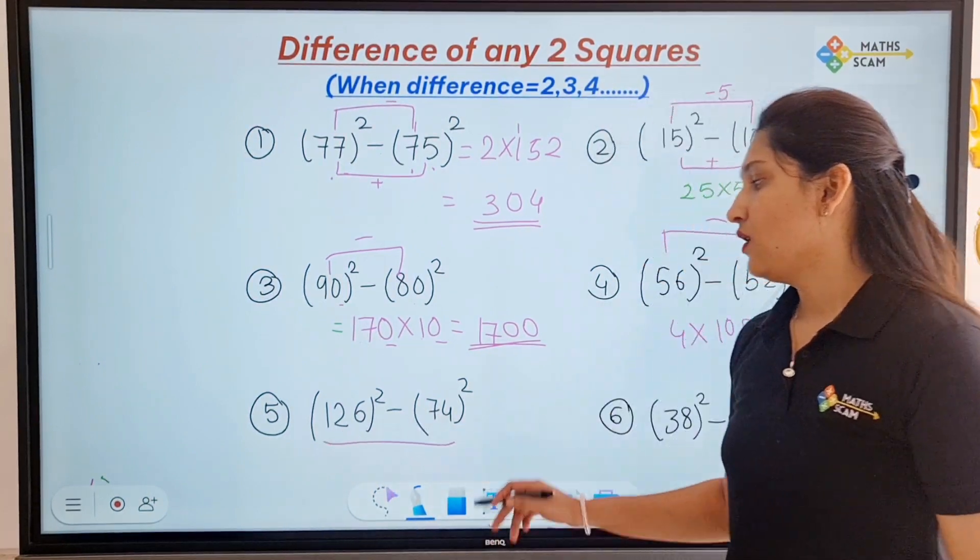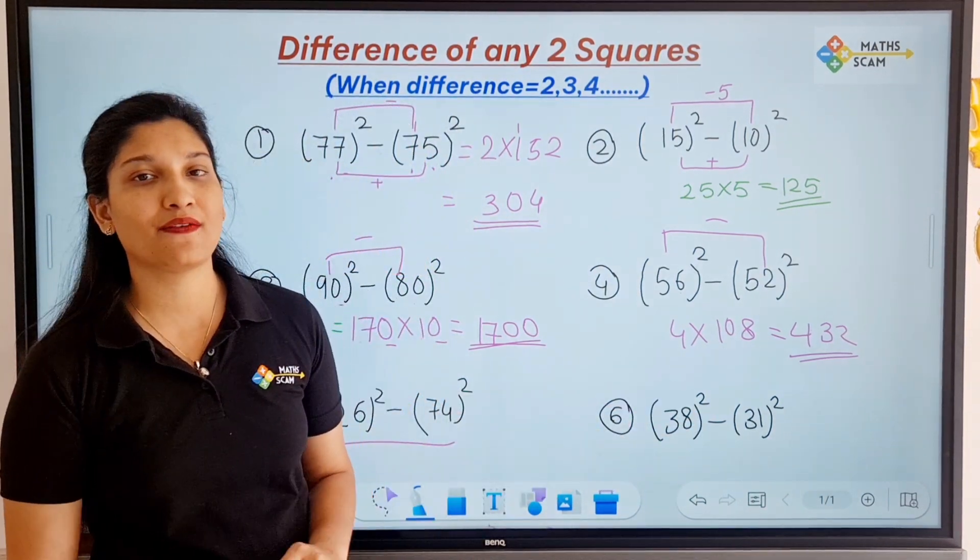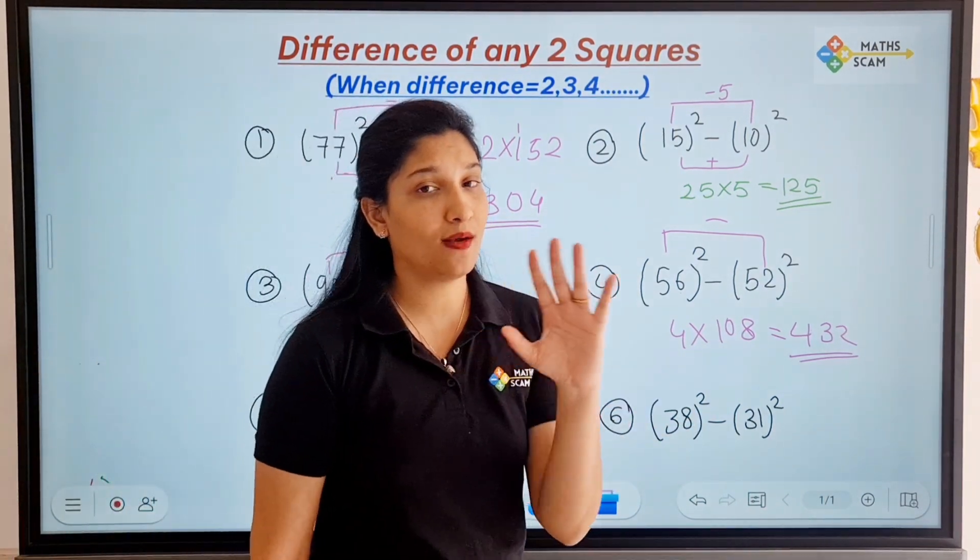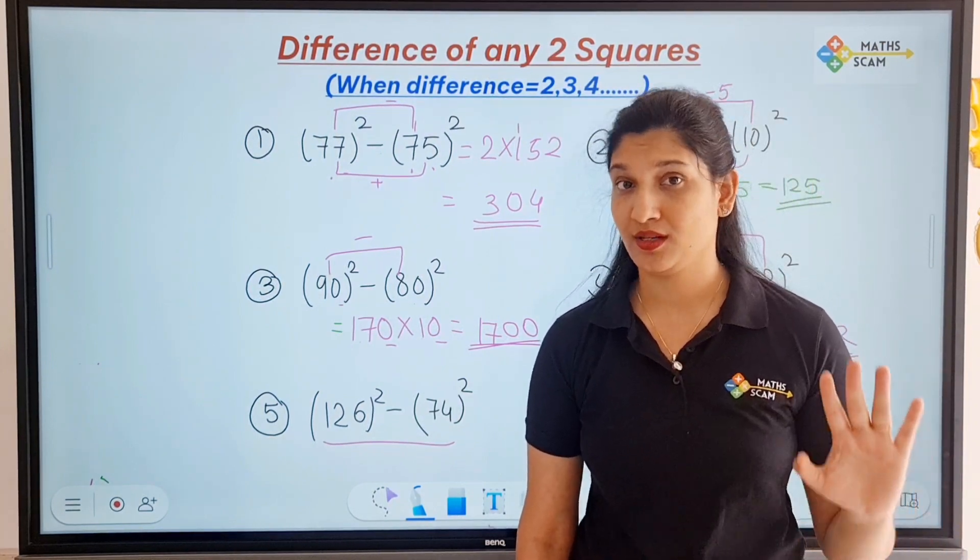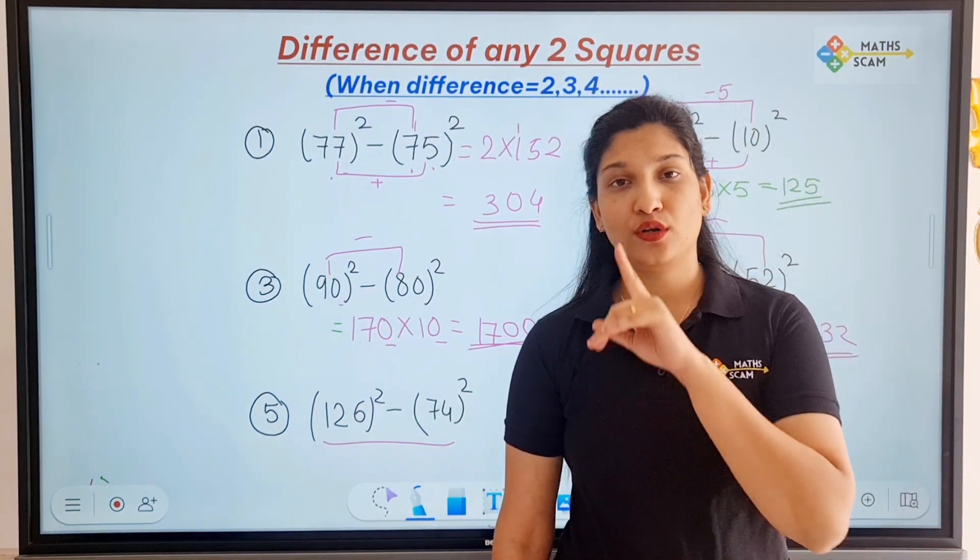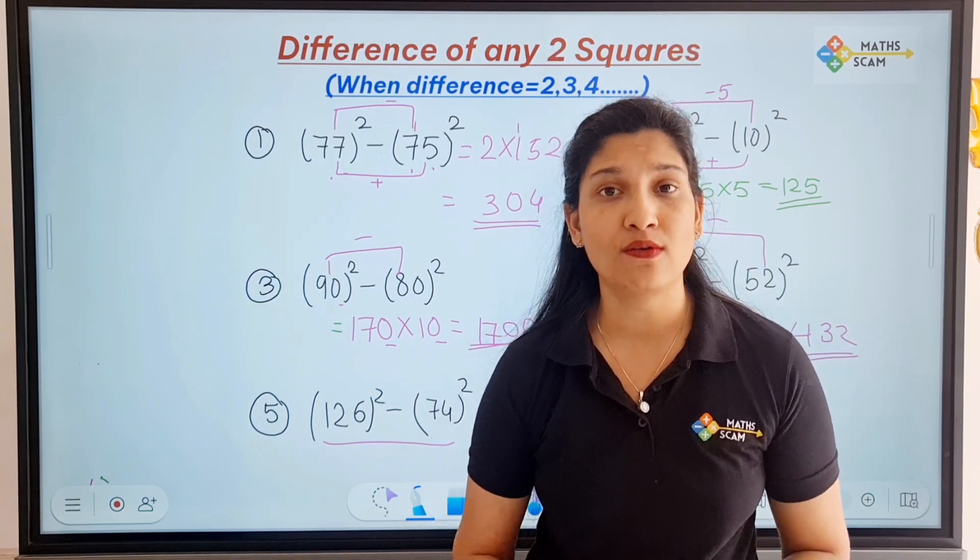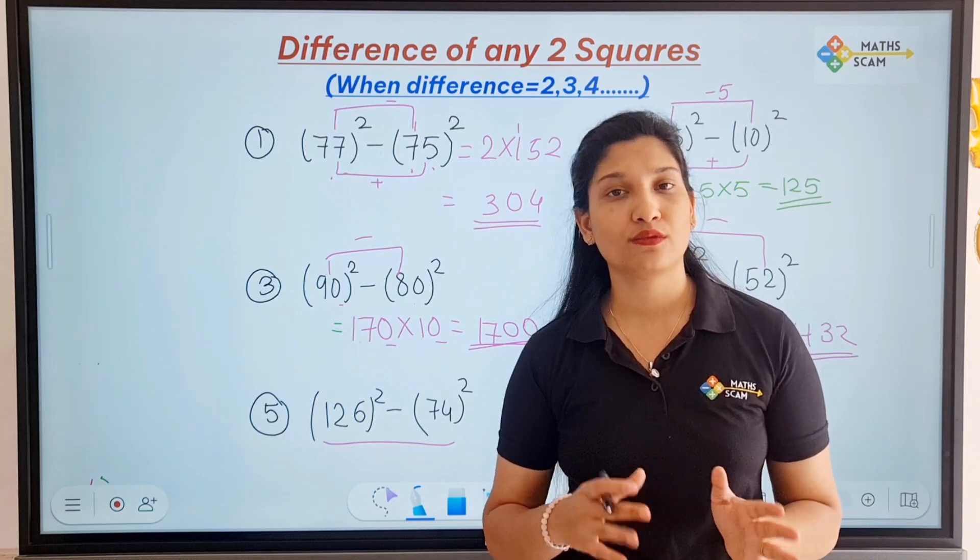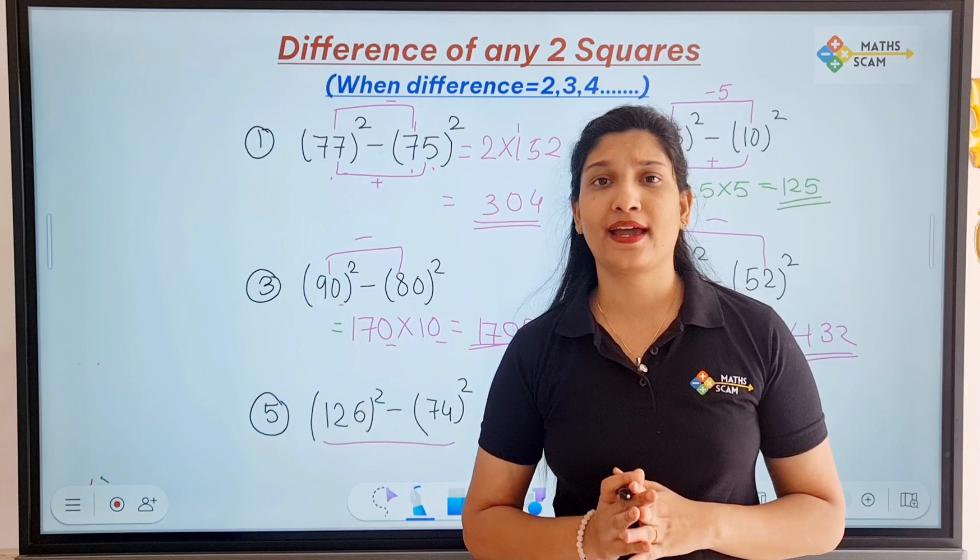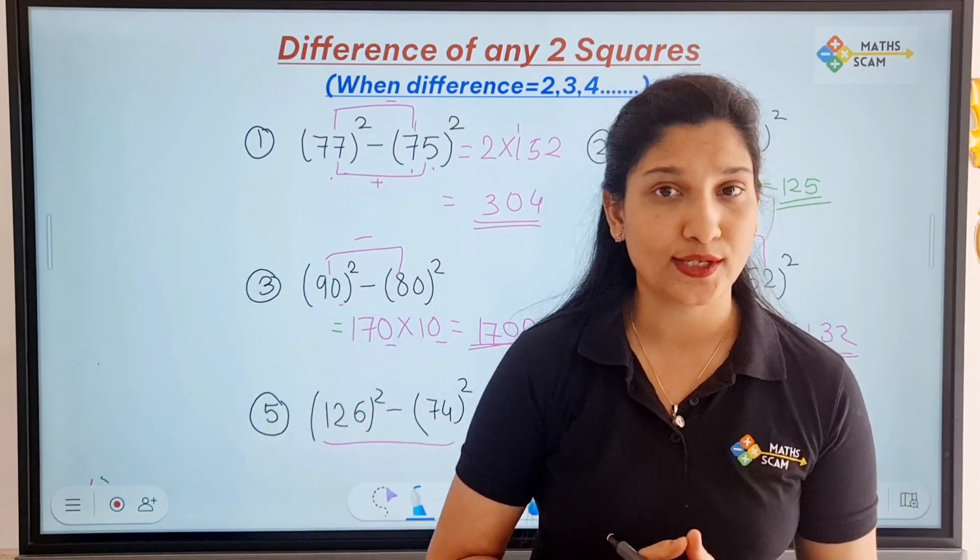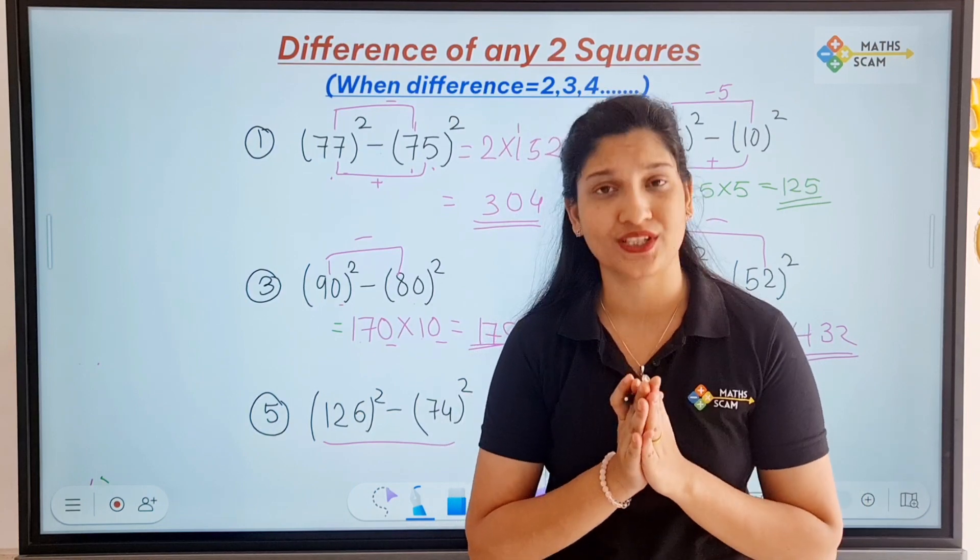The homework questions are 126 square minus 74 square and 38 square minus 31 square. Please solve homework. As I said in all the videos, practice is must, must, must. So do practice. If you have any doubt, any query, you can ask us on any social media platform. We are available on WhatsApp, Facebook, Instagram and YouTube. So go and follow us there too. We are uploading many tricks over there too. So see you guys in the next video. Thank you so much for watching this. Take care. Bye-bye.